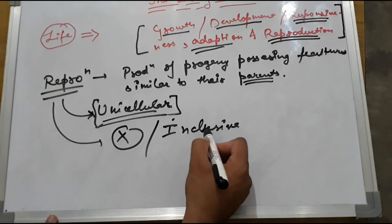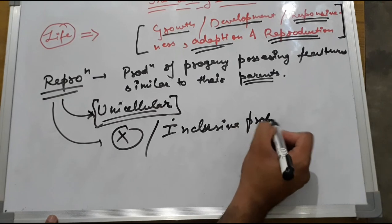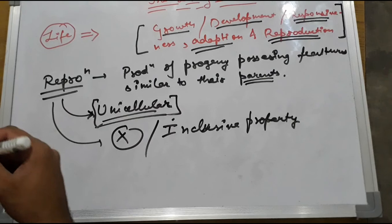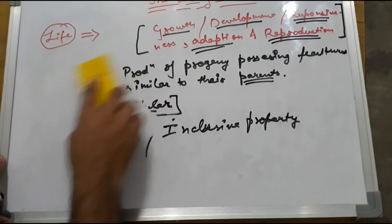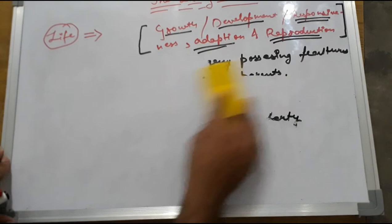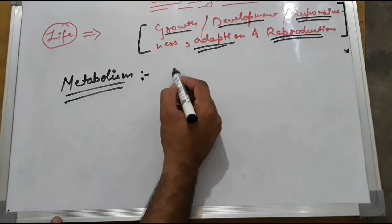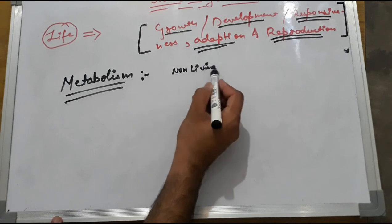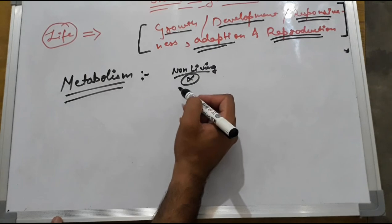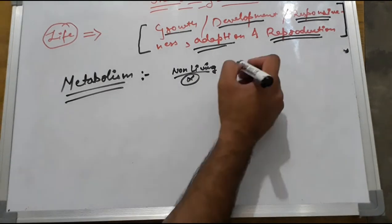Now talking about the other factors. Those are metabolism. Can non-living metabolize food? No. Metabolism. First thing to be kept in mind, this is the defining property.